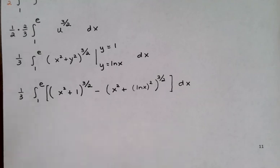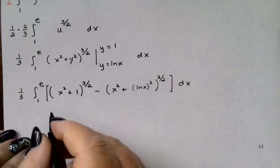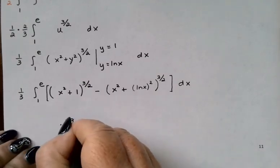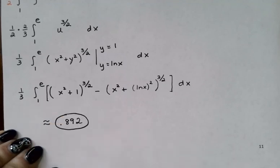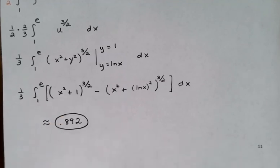Yes, so when I do include the multiplier of 1 third and do that whole integral on my calculator I get about 0.892. It did not come out to a nice fraction unsurprisingly so I'll just leave the approximation on this one. Alright, we'll continue in the next video.